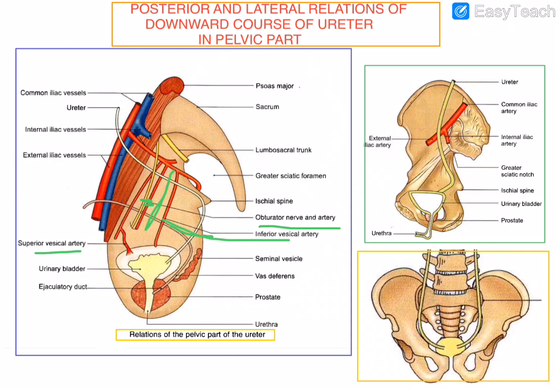Then the inferior vesical artery, and then the middle rectal artery. In females, the ureter forms the posterior boundary of the ovarian fossa. These are all the lateral relations of the downward course of the ureter in the pelvic part.